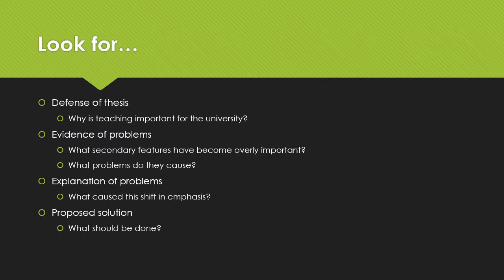Based just on this overview, we already have a number of things we can start looking for. We might expect the authors to defend their thesis — explaining why they think teaching is the most important mission of the university. We also want them to give evidence of the problems they're pointing out: which secondary features have become overly important and what problems do they cause? We might expect some explanation of what caused the shift in emphasis, and finally, some sort of proposed solution.